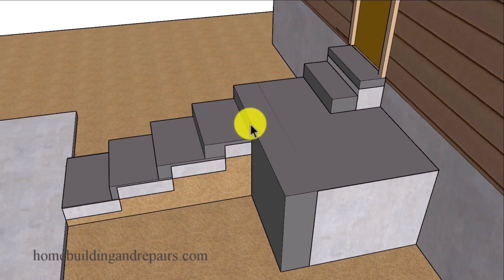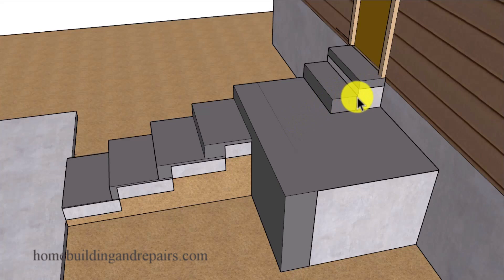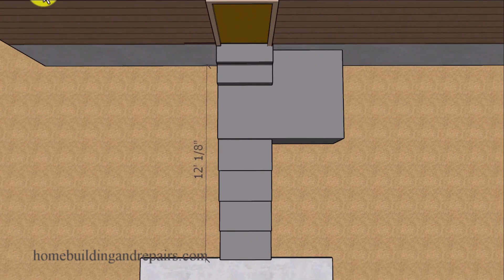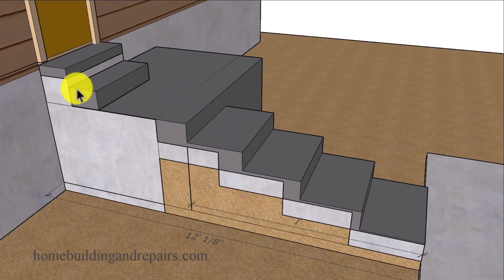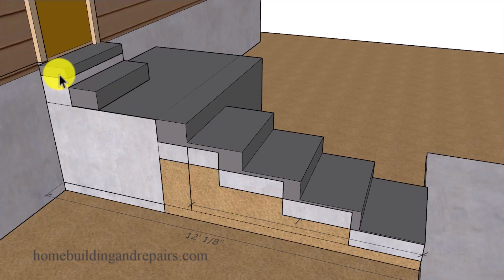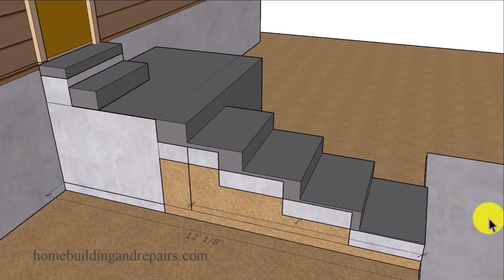You would need to verify with your local building department whether they're going to consider this a separate stairway and allow you to use different tread depths or riser heights. Otherwise a stairway like this will need to be redesigned so that all of the steps are the same size. That could easily be done by extending the length of the landing and then coming down with the same size treads here as you would have down here. If you're redesigning, you could start it here using 12-inch steps for the tread depth, come down, and level it off to the same height.